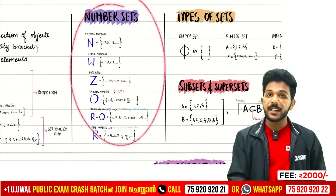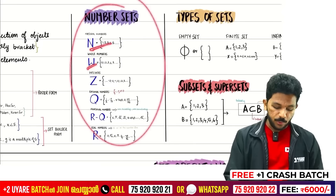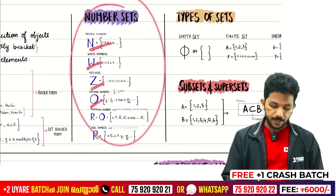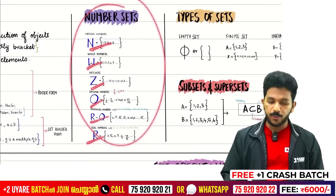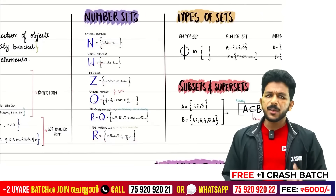We have the number sets: natural numbers, whole numbers, Z (integers), Q (rationals), R minus Q, and real numbers. We have some questions on these.